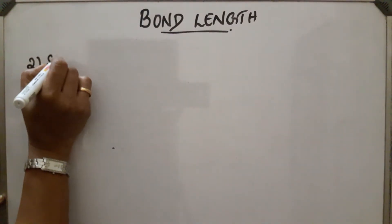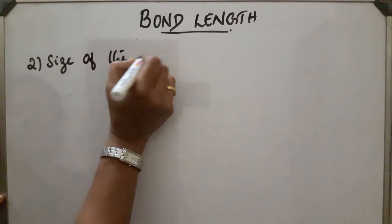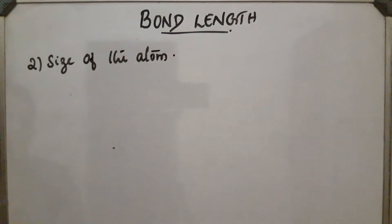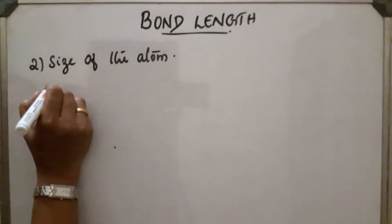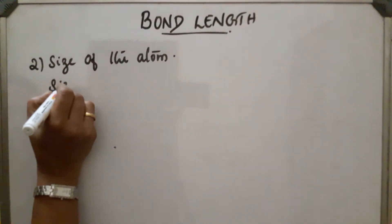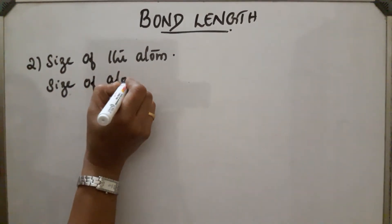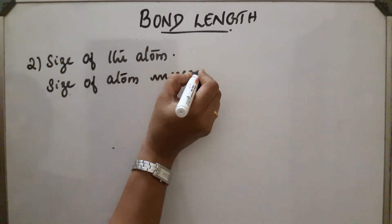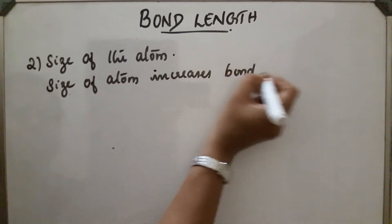The second factor is size of the atom. As the size of the atom increases, bond length also increases.